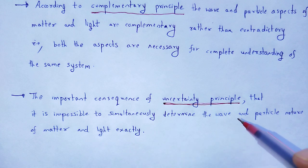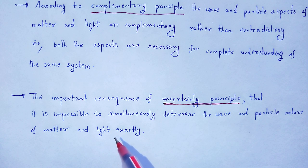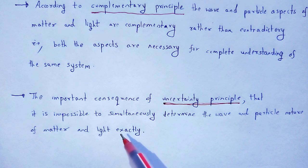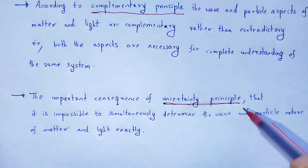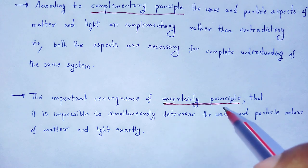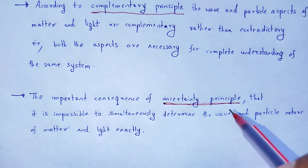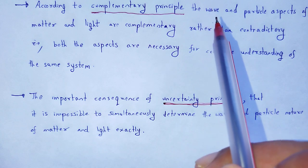When we consider the wave nature of a system, then the particle characteristic of that particular system is silent. Again, if we consider the particle characteristic of that particular system, then the wave characteristic is silent. That is the Uncertainty Principle, which is related to the Complementarity Principle.